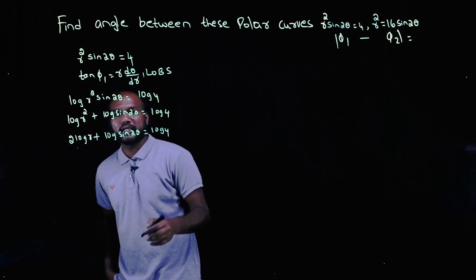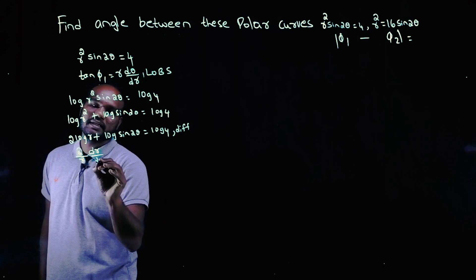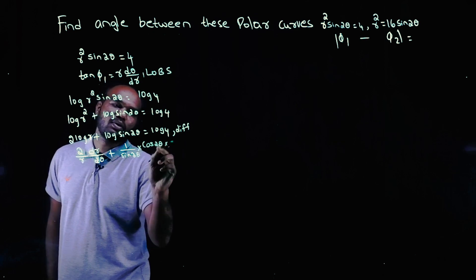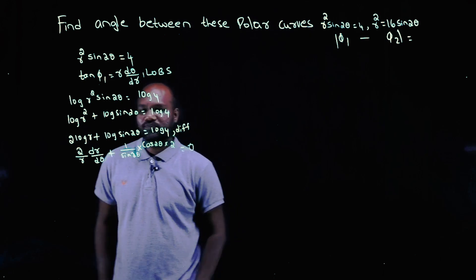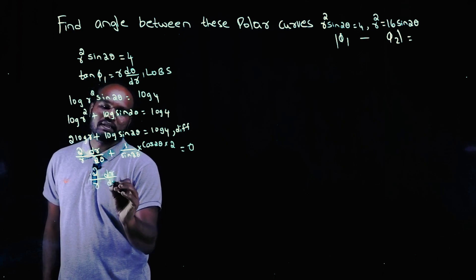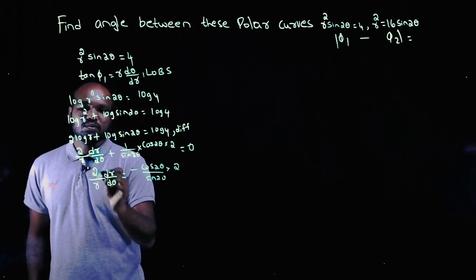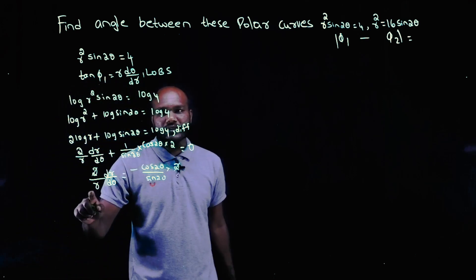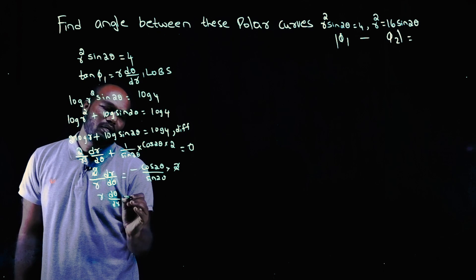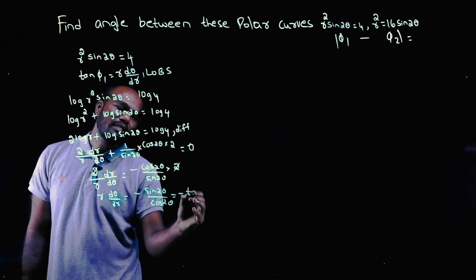Now we differentiate. The differentiation of 2·log r gives 2/r · dr/dθ. The differentiation of log(sin2θ) gives (1/sin2θ)·cos2θ·2. The differentiation of log 4 is 0. Rearranging, 2/r · dr/dθ = -2·cos2θ/sin2θ. The 2s cancel, and I'm not interested in 1/r but rather r, so reciprocating gives r·dθ/dr = -sin2θ/cos2θ, which is -tan2θ.